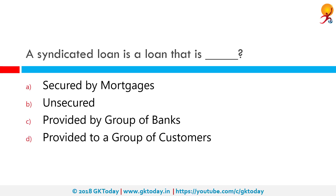A syndicated loan — syndicated lending is a form of lending in which a group of lenders collectively extend a loan to a single borrower. The group of lenders is called a syndicate and the loan is called a syndicated loan. So the correct answer is: provided by a group of banks.